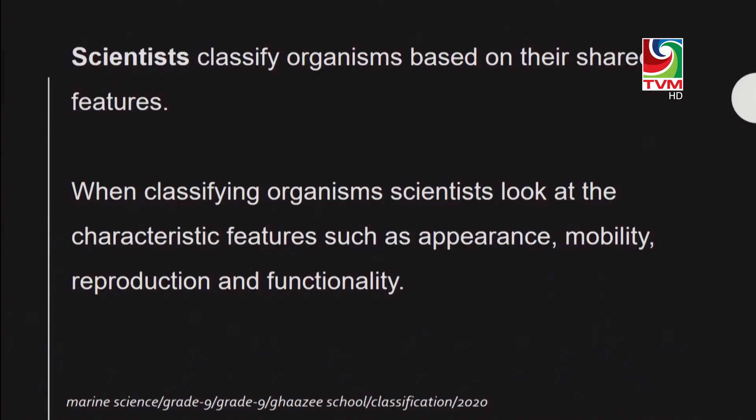In taxonomy, scientists classify organisms based on their shared features — the features they can observe from the organism. When classifying organisms, scientists look at features like appearance, mobility, reproduction, and functionality.